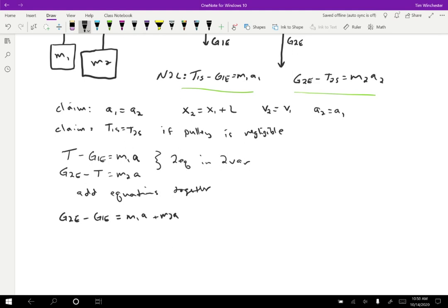I know that the two weights are just MG, so I'll write M2G minus M1G equals M1A plus M2A. I'm going to factor both sides. M2 minus M1 all times G equals M1 plus M2 all times A. If I solve for acceleration, I get A equals M2 minus M1 over M1 plus M2 all times G. That's the answer.